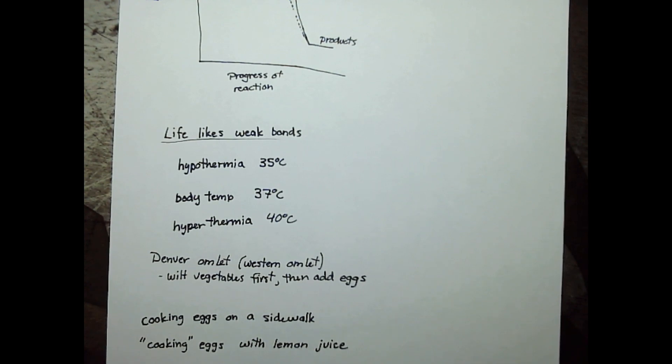Another example that shows the sensitivity of proteins is cooking eggs. When you're cooking a Denver omelet or western omelet, you have to wilt the vegetables first before you add the eggs. Eggs are mostly protein and they denature much more quickly than vegetables or other foods.